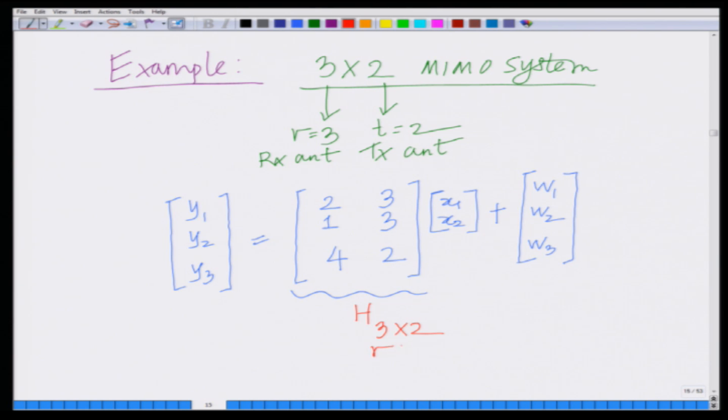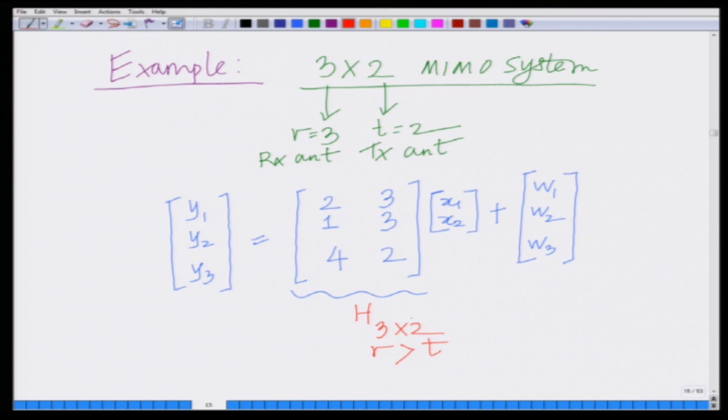We can see that r is strictly greater than t. Therefore, H is a matrix with number of rows strictly greater than the number of columns, which means H inverse does not exist. However, we know how to construct the zero forcing receiver.